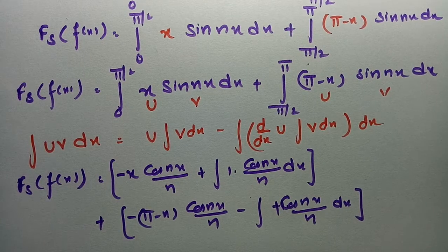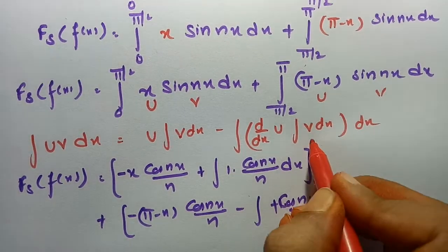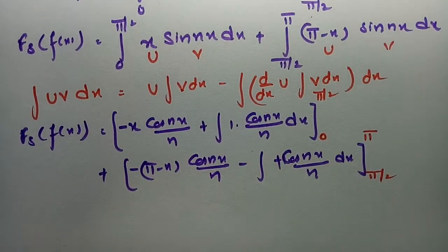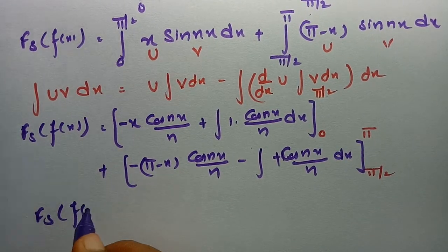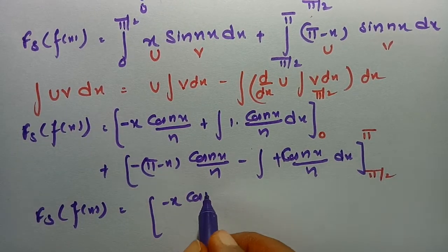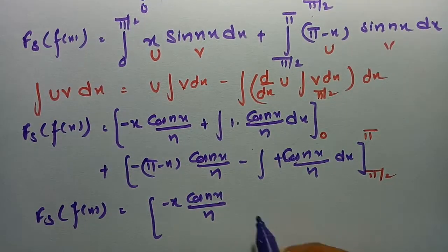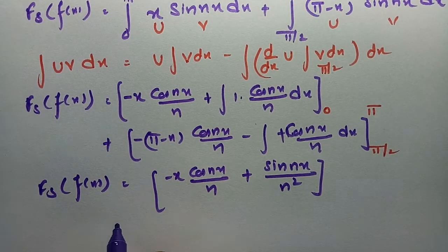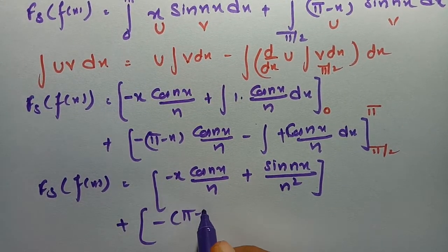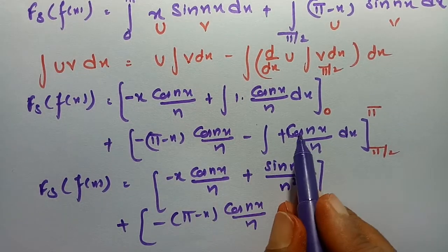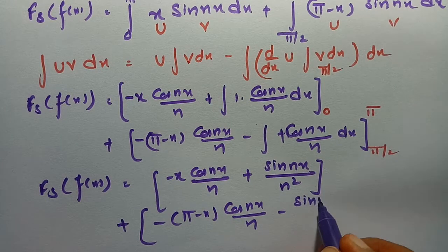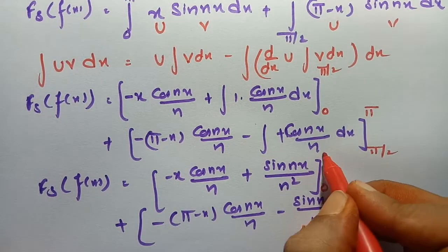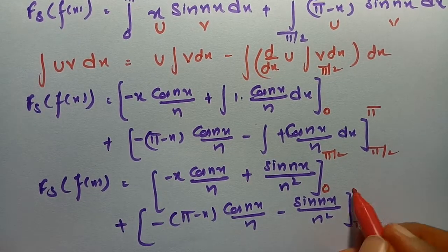The limits for the first bracket are 0 to π/2 and for the second bracket π/2 to π. After integrating cos(nx)/n we get sin(nx)/n², so the Fourier sine transform of f(x) equals [−x·cos(nx)/n + sin(nx)/n²] from 0 to π/2, plus [−(π − x)·cos(nx)/n − sin(nx)/n²] from π/2 to π.